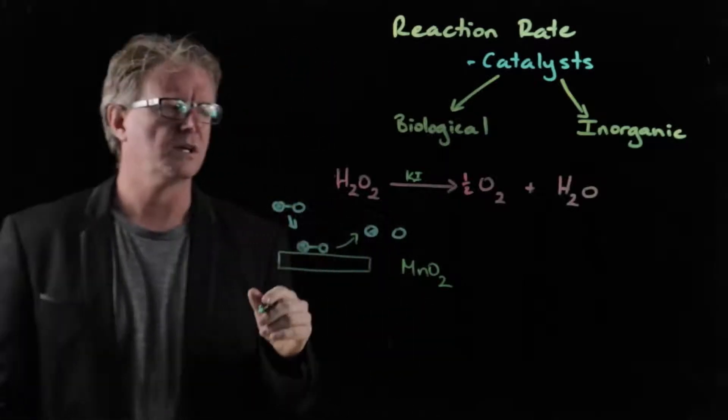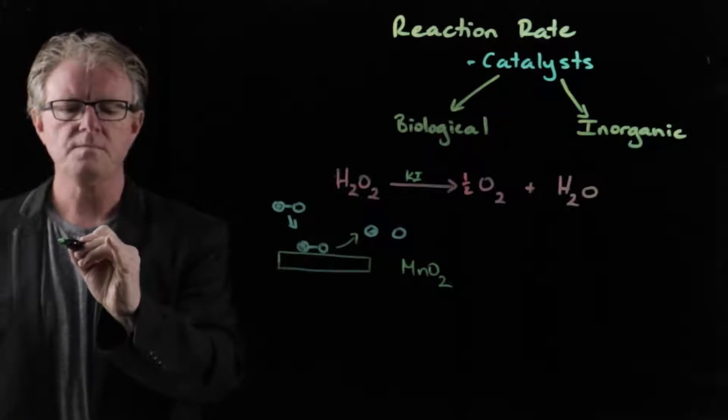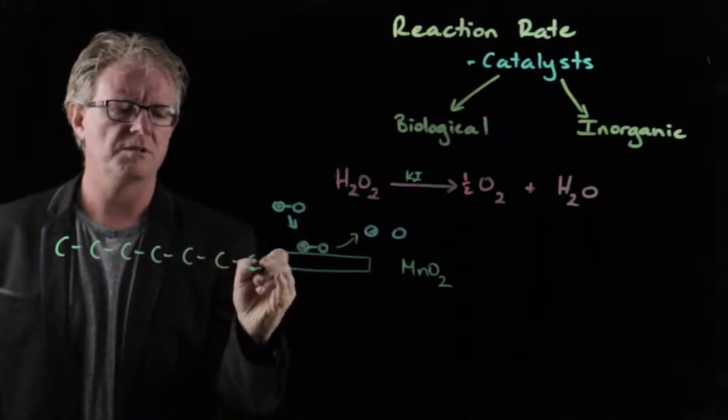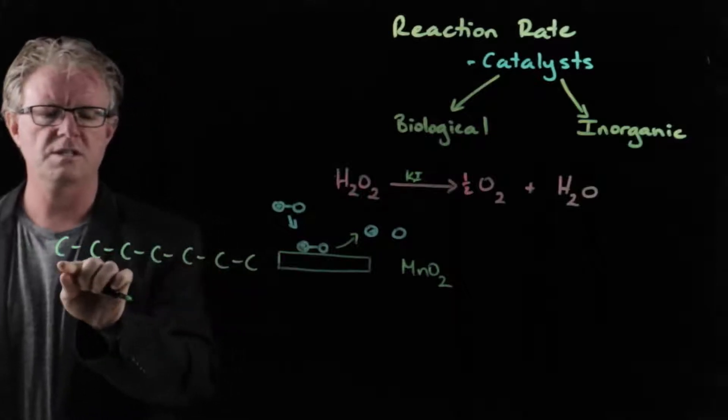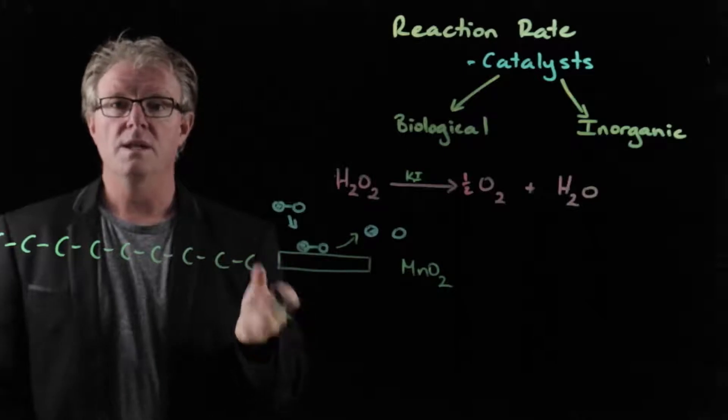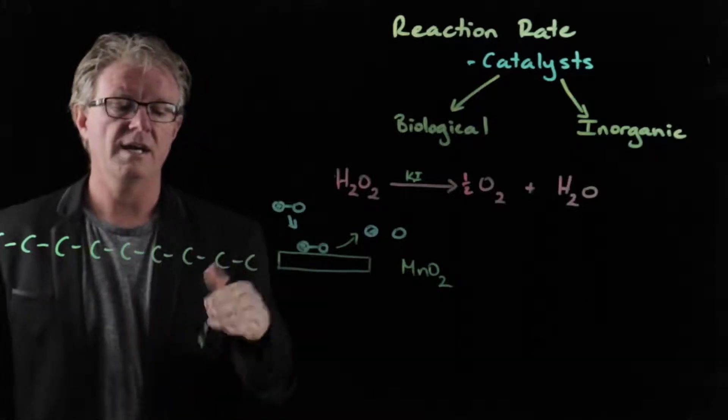So if we have a look at something like this here, we've got a larger hydrocarbon chain, so one, two, three, four, five, six, seven, eight, nine. So what would that be called? That's right, nonane. So this is nonane.